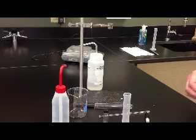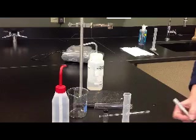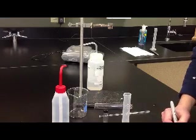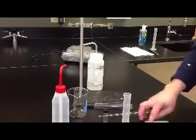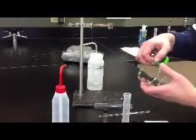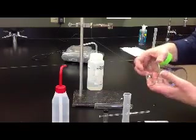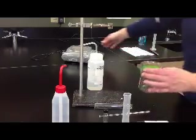First thing you're going to need to do is label your beaker, and then you want to find the mass of this to the nearest hundredth of a gram.